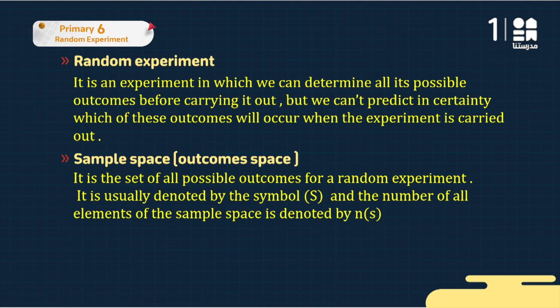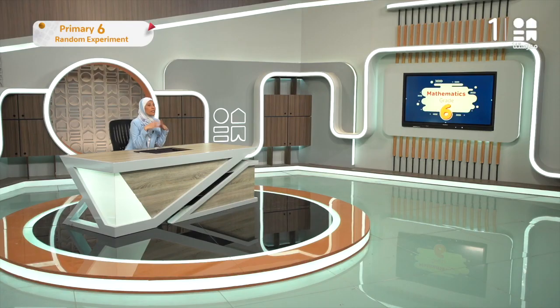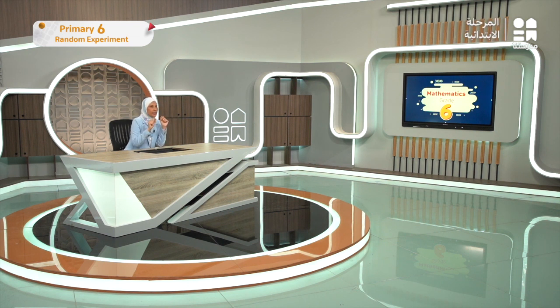The sample space is the set of all possible outcomes for a random experiment. It is usually denoted by the letter S, and the number of all elements of the sample space is denoted by n(S).